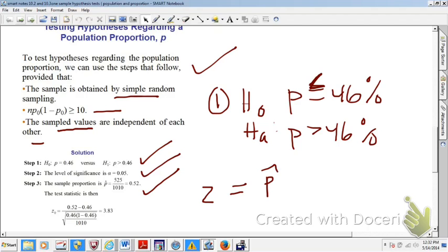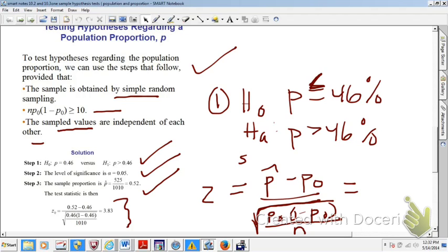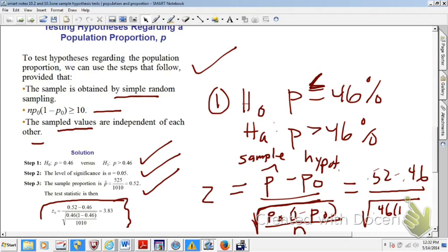Your test statistic is P hat minus P naught over a big square root, P naught, 1 minus P naught, all over little n. And that's one big old square root. Now you can see that that is crunched out in here. I have that set up for you. So you're taking your sample proportion. If it helps you, just write recipes for yourself. P hat is from your sample. P naught is your hypothesized proportion. So you're taking your 0.52 minus your 0.46 over big square root, 0.46, 1 minus 0.46, all over n, which was 1,010. So when you crunch out your z-score, you will get z equals 3.83. That is called your test statistic.